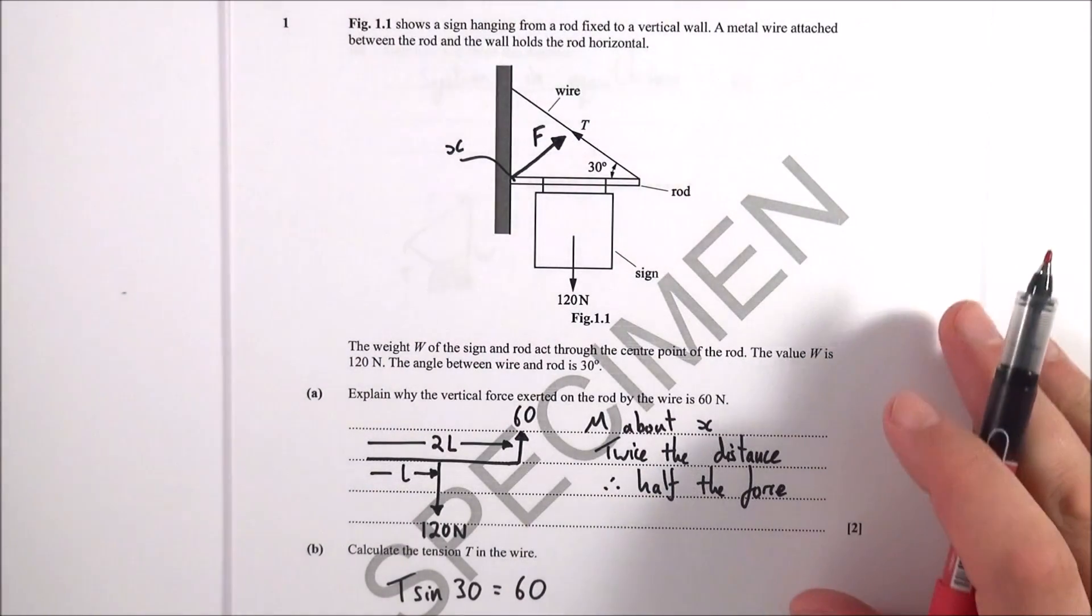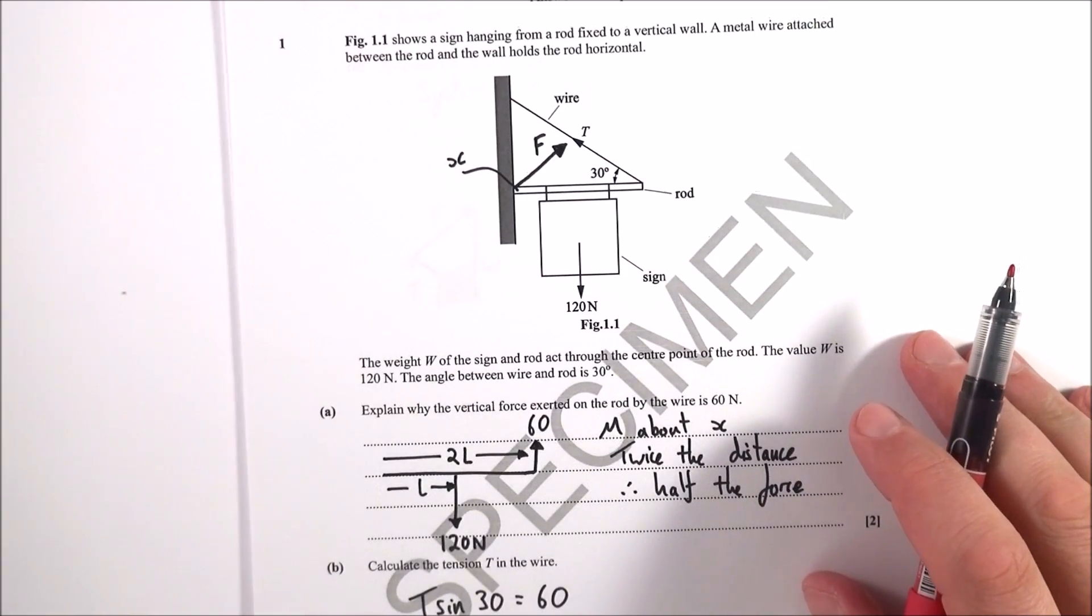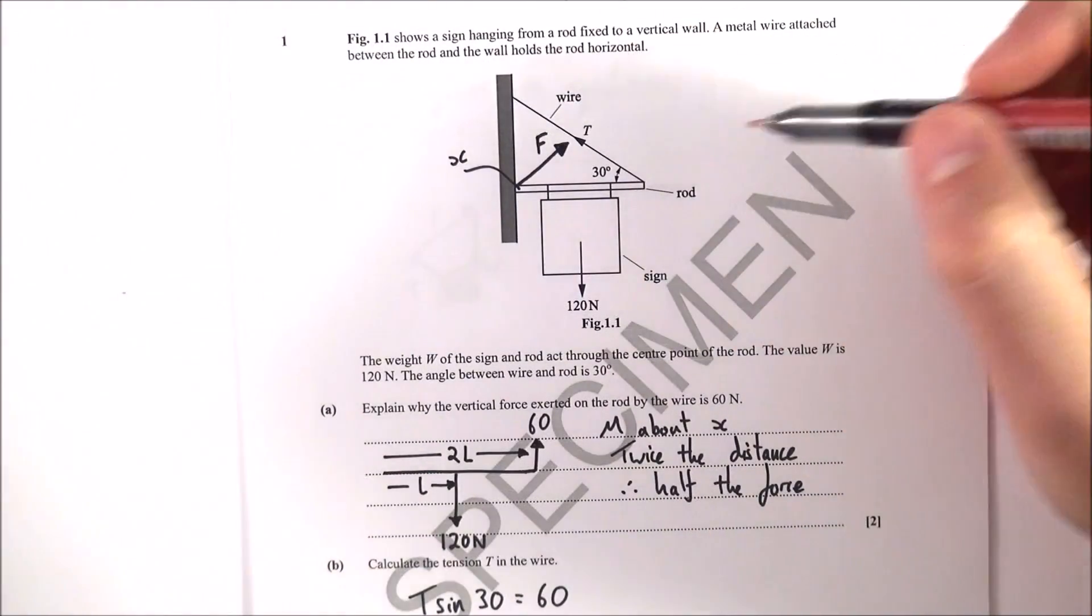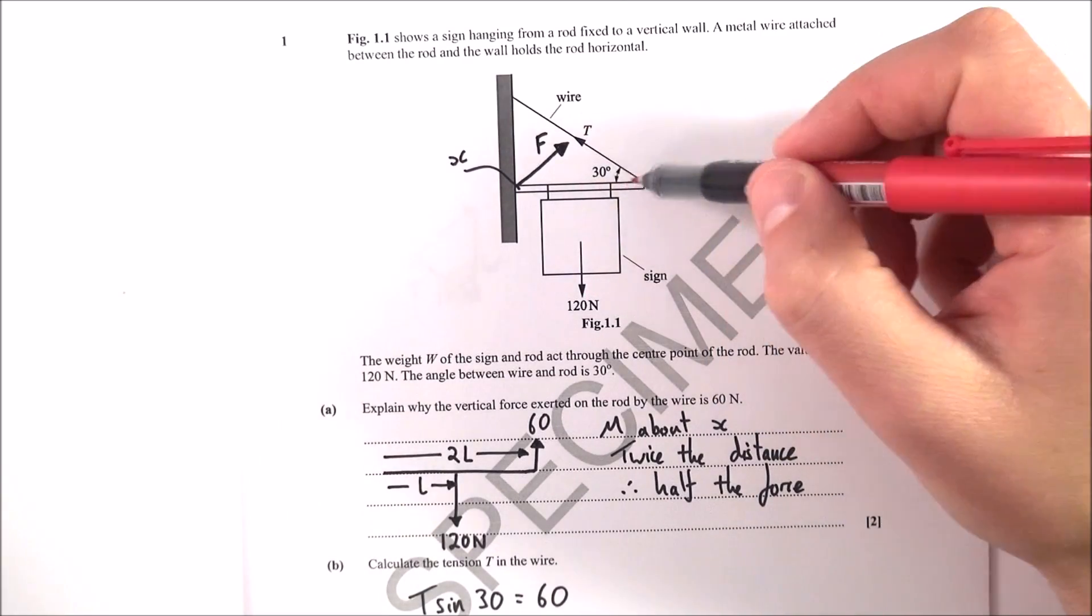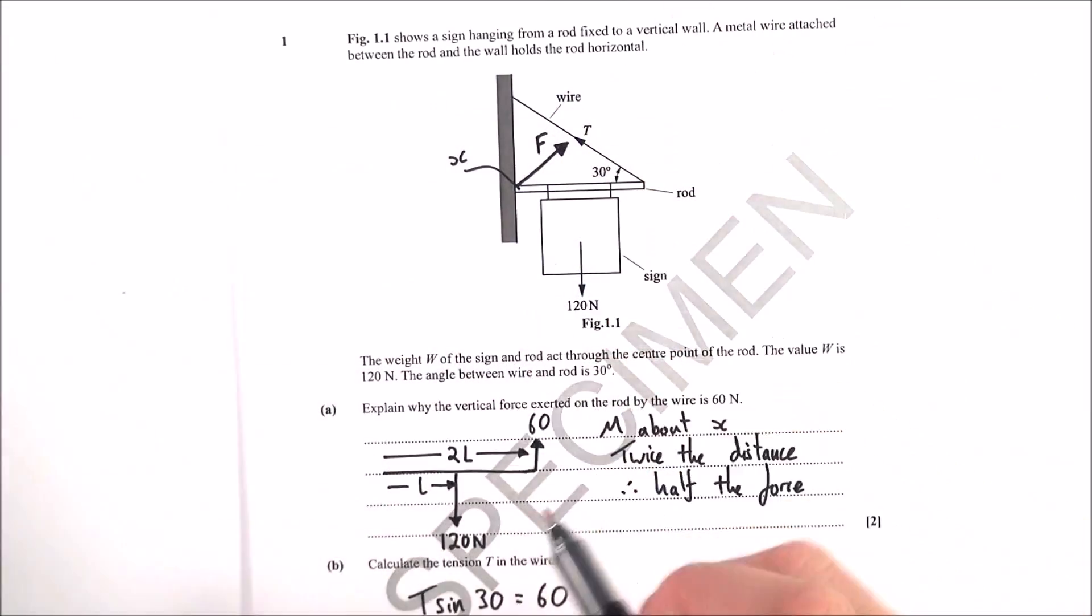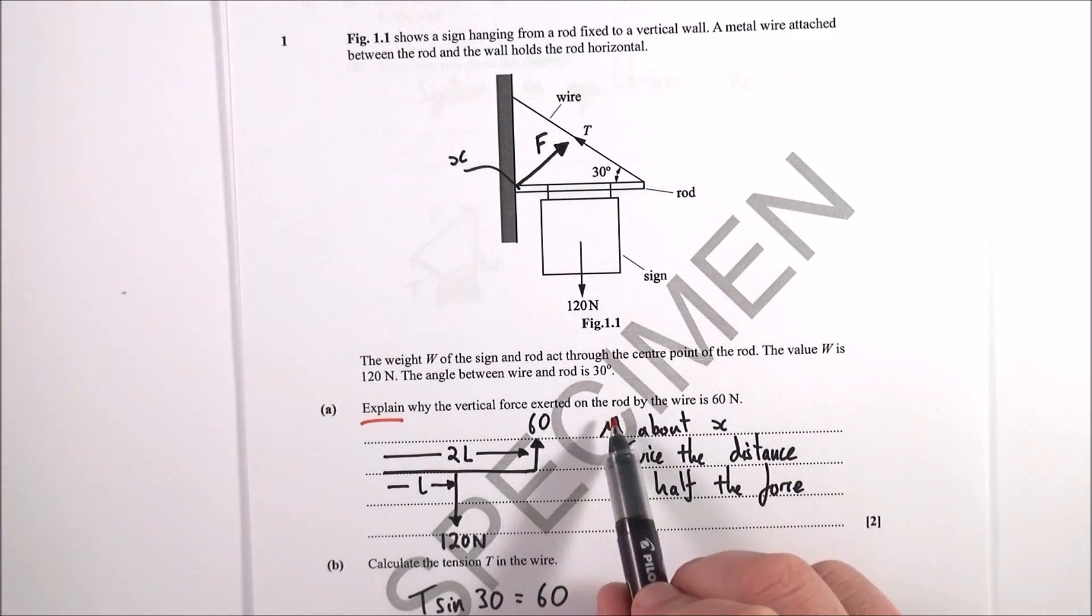Okay question number one starts out with something to do with moments. You've got a diagram here that shows a sign of weight 120 newtons acting on a rod which is held up with a wire in tension. So first of all you've got an explanation about why the vertical force exerted on the rod by the wire is 60 newtons.